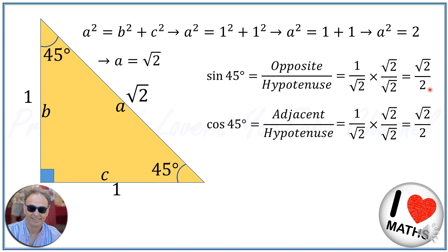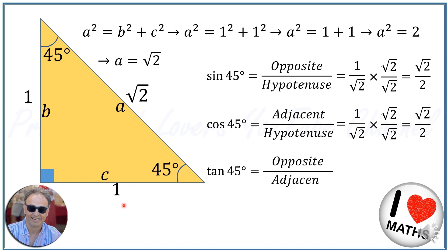Since tangent is the ratio of opposite to adjacent, tangent of 45 degrees will be 1 over 1, which is equal to 1. So tangent of 45 degrees is 1.